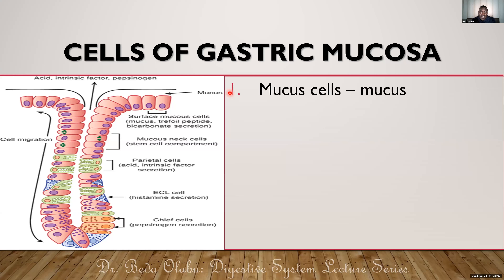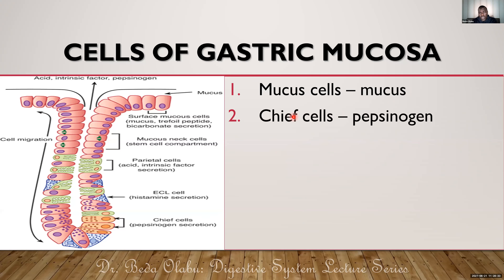We will mention the cell types of the gastric mucosa and the substances they secrete. We have the mucus cells, largely found near the neck — sometimes called mucus neck cells — which produce mucus. The purpose of the mucus is to lubricate the inner lining of the stomach to protect against the corrosive effects of the acid. Then we have the chief cells of the stomach — also called the principal cells — which produce pepsinogen, a proenzyme converted to pepsin, the active enzyme that digests proteins.